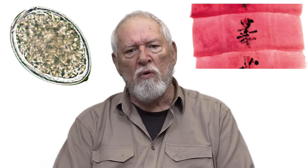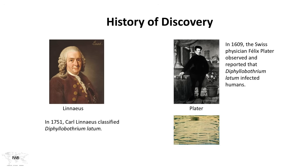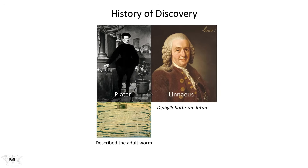Because it's such a large worm, it was easily discovered. In 1609, Platter actually described an entire tapeworm derived from a patient who had succumbed to another disease and presented on autopsy as harboring this tapeworm as well. He noted how long this worm is — it can go over 30 feet in length, an enormous amount of biomass sitting inside our small intestines. Linnaeus is responsible for naming it Diphyllobothrium latum.